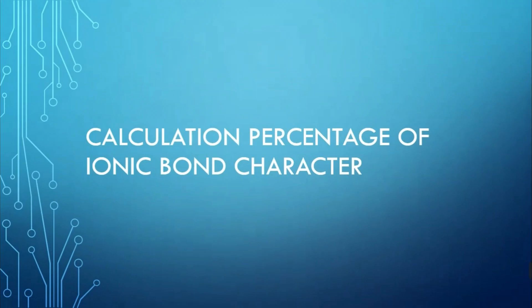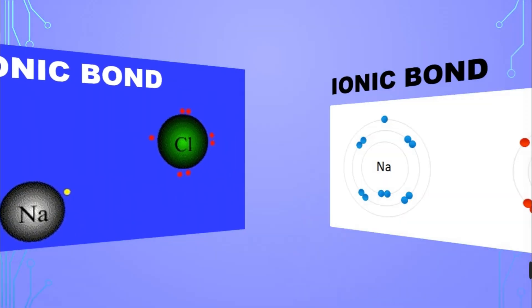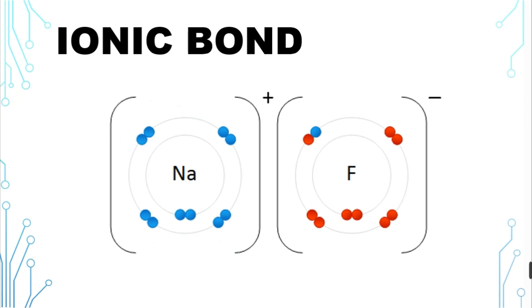Calculating the ionic portion and covalent portion of a chemical bond. In a chemical bond, if the interaction is realized by transferring electrons between two atoms, it is called an ionic bond, such as the bond between the sodium atom and the chlorine atom in sodium chloride.